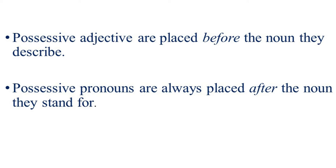Now, let us see how we can find out if the word denoting possession has been used as an adjective or as a pronoun. We all know that adjectives are used to describe nouns. So possessive adjectives are placed before the noun they describe. In the example we just read — 'my car' — 'my' has been placed before the noun 'car.' Possessive pronouns are always placed after the noun they stand for. For example, in the sentences we read: 'This is not my car. Mine is white.' Mine comes after the noun 'car.'